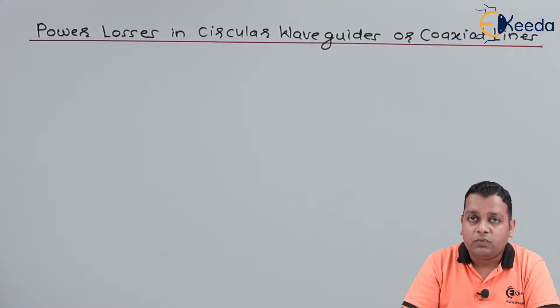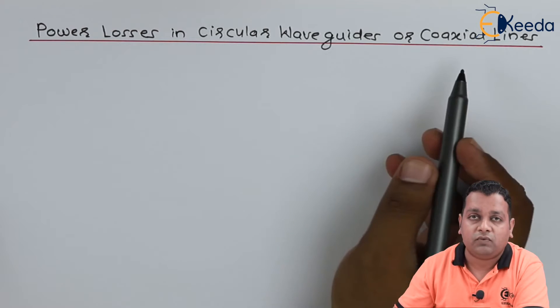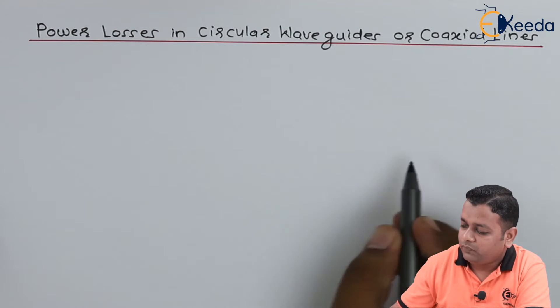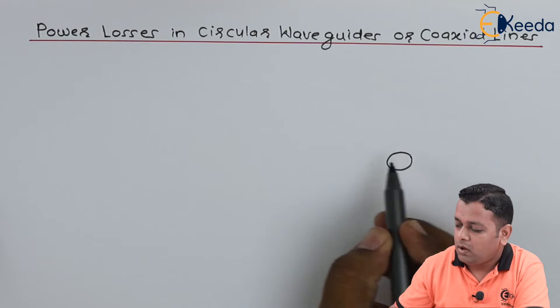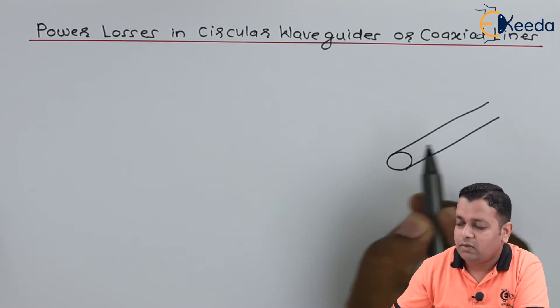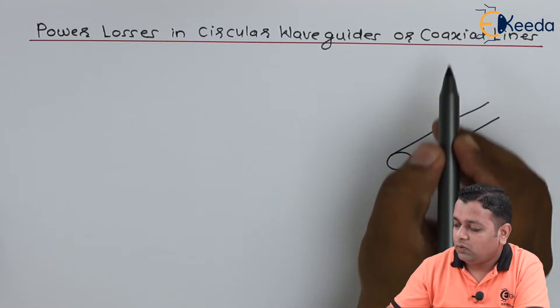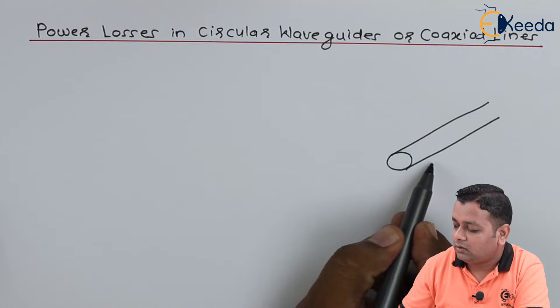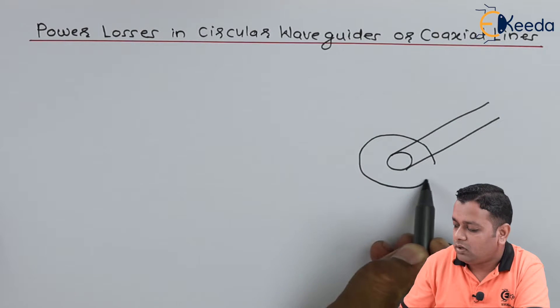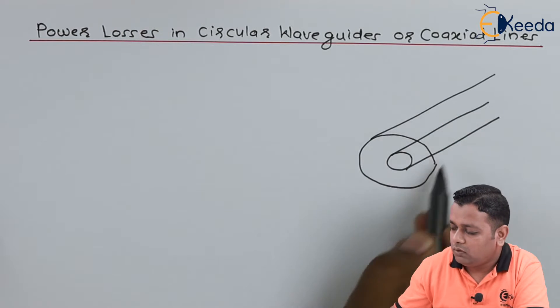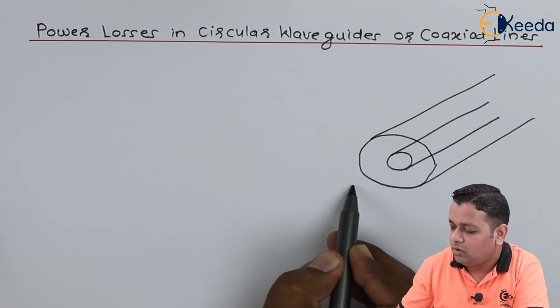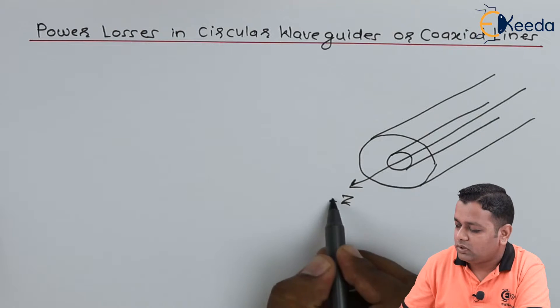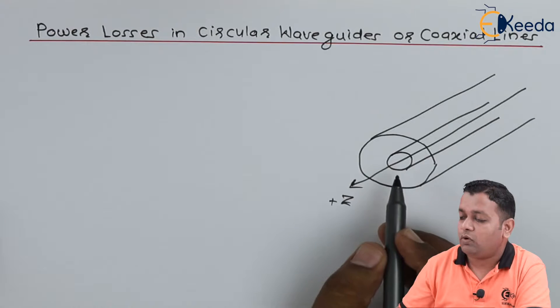So here we start with our topic: power losses in circular waveguides or coaxial lines. As we know, the coaxial lines are having a simple structure of two conductors having the same axis, hence one inside the other. So let us say this is the central conductor and it is surrounded by the outer conductor. For both we have the same axis running through their center like this.